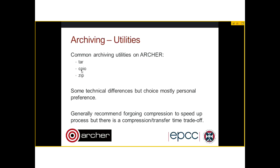The archiving utilities we'll be looking at are tar, cpio, and zip. These have their pros and cons, but it's mostly down to personal preference. Generally I stick with tar as it's the most common in the Linux world. It's recommended that you forego compressing archives for the RDF, as this adds additional overhead to the creation and extraction processes. A smaller file will take less time to copy, so there's a trade-off, but unless you get an extremely good compression ratio, you'll likely be better skipping gzip or whatever compression the archiving utility provides.